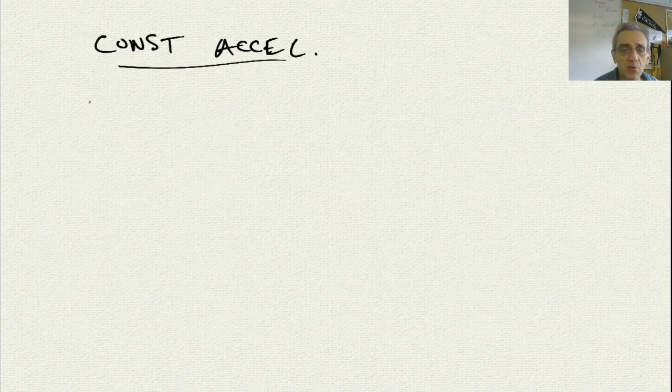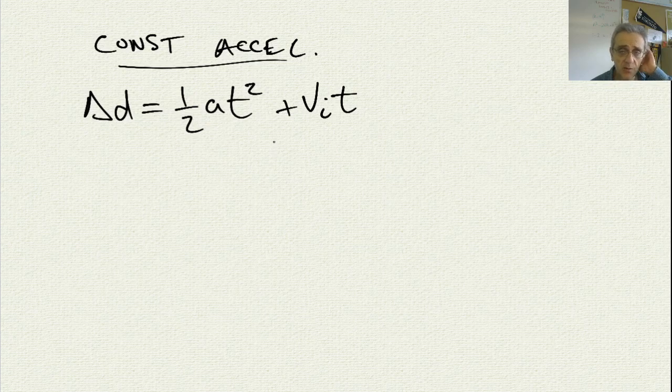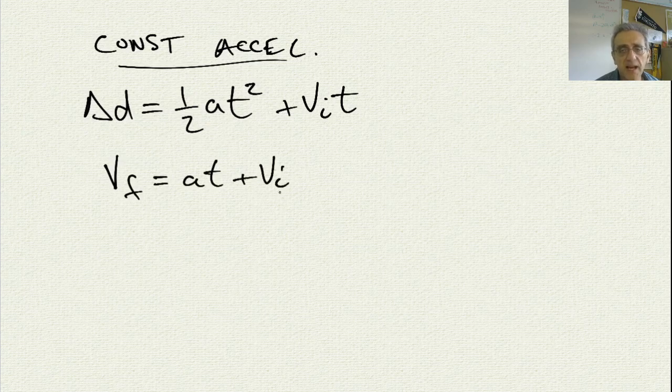So the two equations that we have so far, one of them is this one, 1 half at squared plus vit. Now we derived this in the last lesson, and the other equation that we have is v-final equals at plus vi.